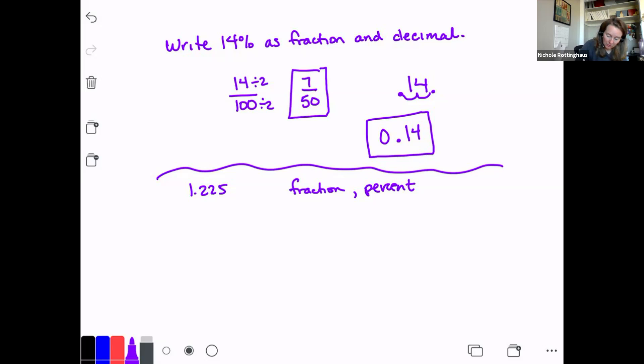Okay, this is a whole here. And then I have a decimal, right? So we're going to write this as a mixed number. This is 1 and 225 thousandths. Remember to write a decimal as a fraction, we read the decimal and write that number over the appropriate place value. So that is 225 thousandths.